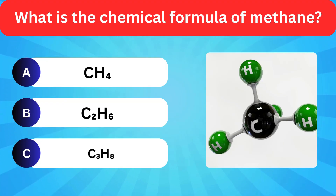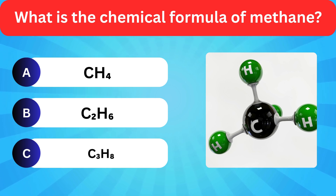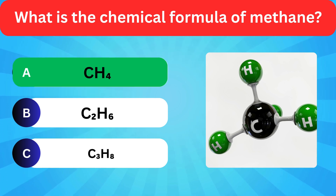What is the chemical formula of methane? Options: CH4, Ethane, Propane. Correct answer is CH4.